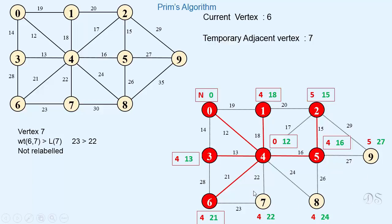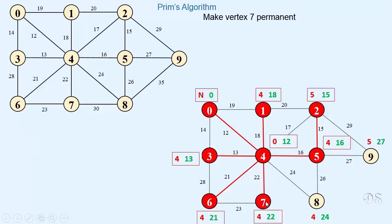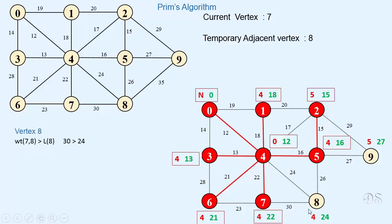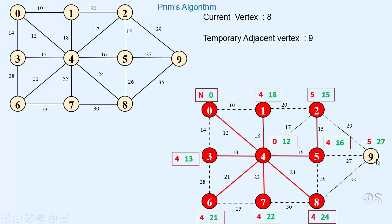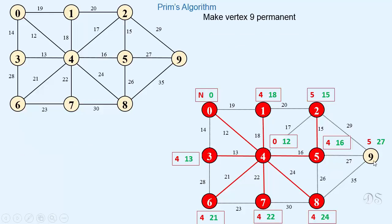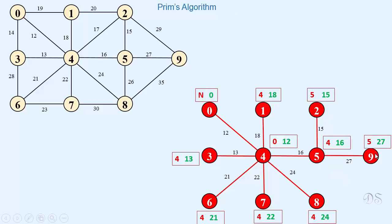Vertex 7 has the minimum value among remaining temporary vertices, so we make it permanent. Vertex 7 is now the current vertex. We examine vertex 8 adjacent to vertex 7 — 35 is greater than 24, so we do not relabel vertex 8. Vertex 8 has the minimum value among remaining temporary vertices, so we make it permanent. We examine vertex 9 adjacent to vertex 8 — 35 is greater than 27, so we do not relabel vertex 9. Vertex 9 is the only remaining temporary vertex, so we make it permanent. All vertices are now permanent and we have obtained the minimum spanning tree.